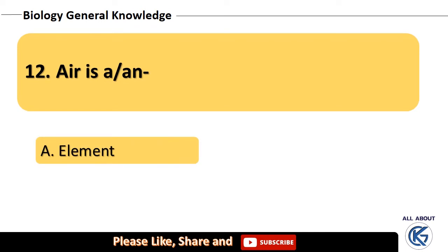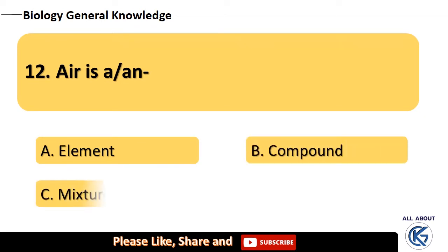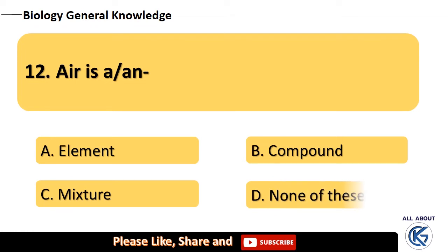Air is — an element, a compound, a mixture, or none of these? The right answer is mixture.